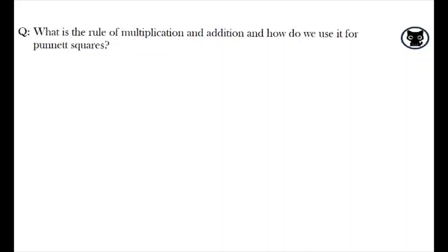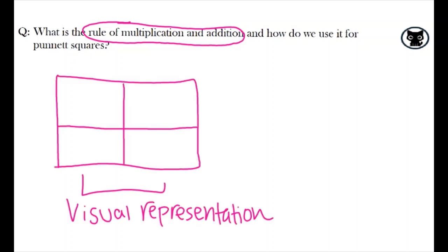Hey guys, so a classmate asked, what is the rule of multiplication and addition, and how do we use it for Punnett squares? Let's first understand why we need to know such rules. We may already be used to Punnett squares, this visual representation of crosses that allows us to see the probability of getting a certain genotype for our offspring.